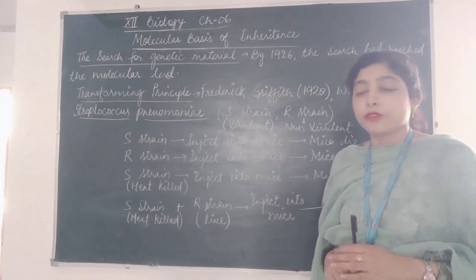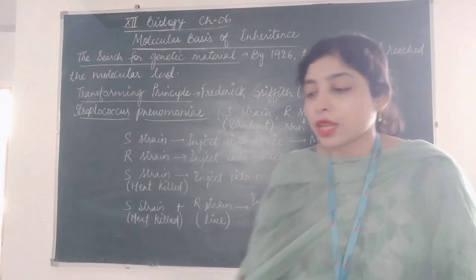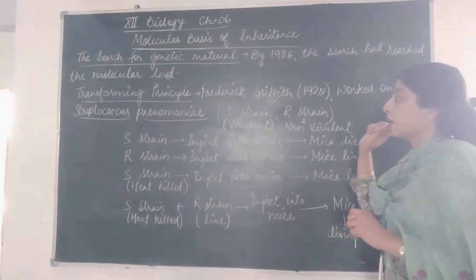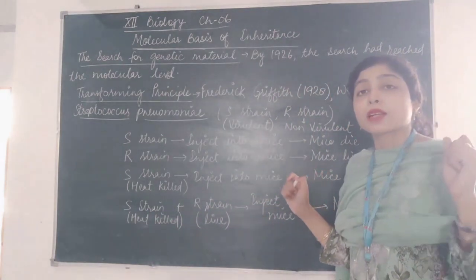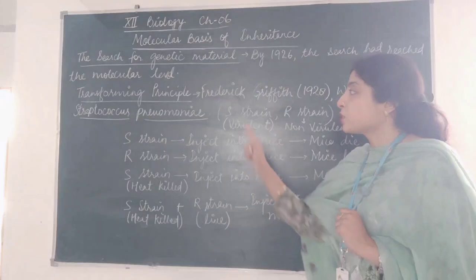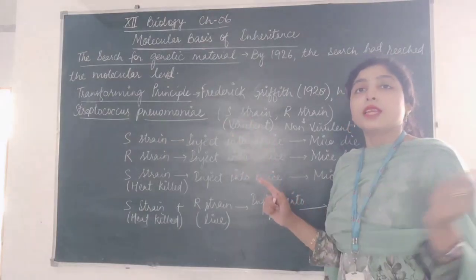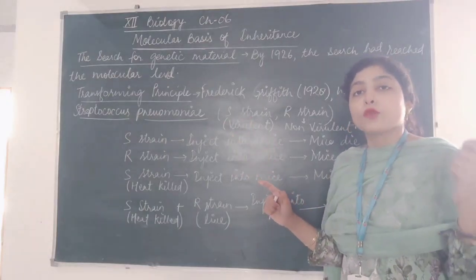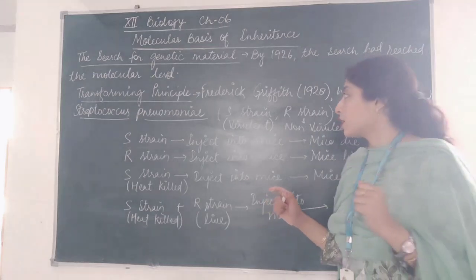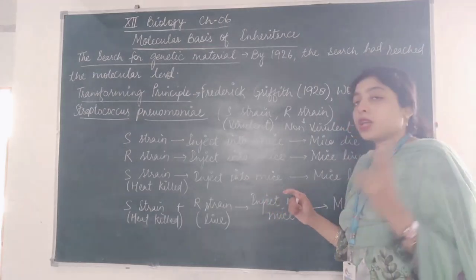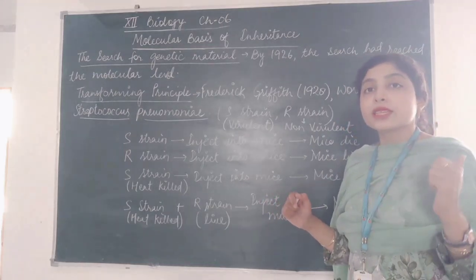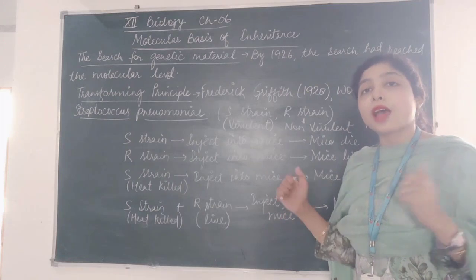Frederick Griffith, in the year 1928, worked on a bacteria called Streptococcus pneumoniae, which causes pneumonia. This bacteria has two strains: S-strain and R-strain.